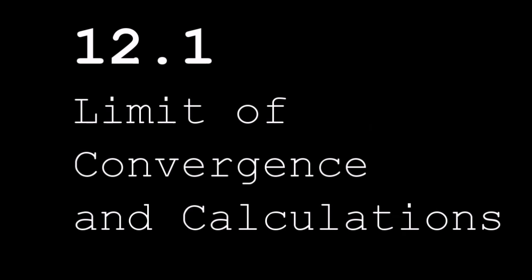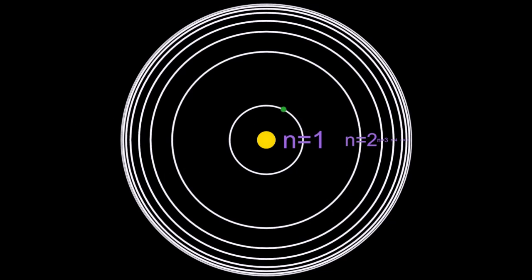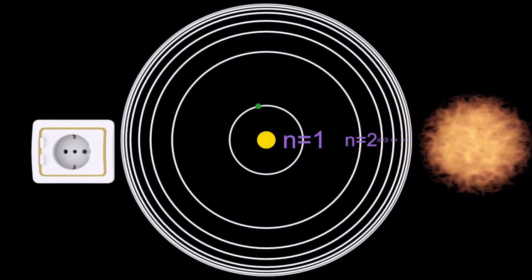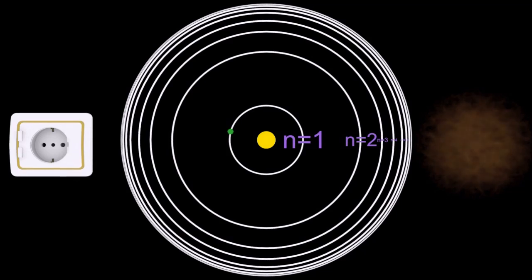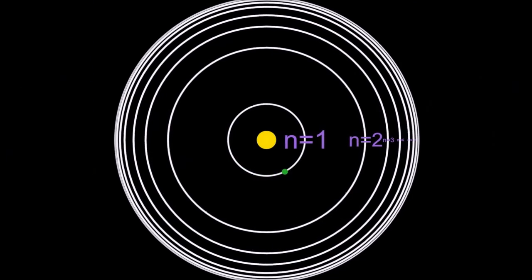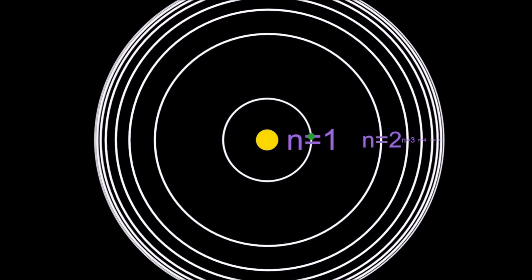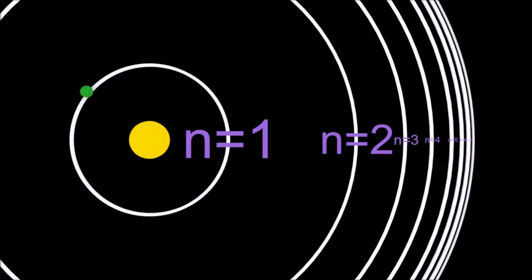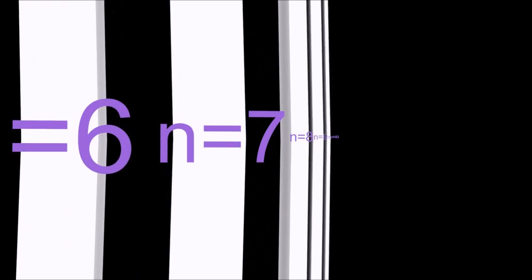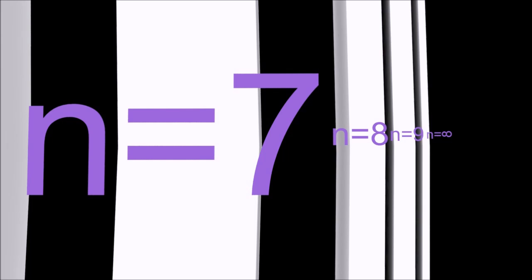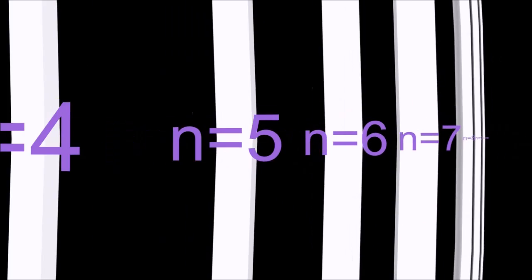12.1: limit of convergence and some calculations. Here's the Bohr model of the hydrogen atom. The main energy levels go from n equals 1 all the way through to n equals infinity, though the diagram stops at n equals 9 for clarity's sake.